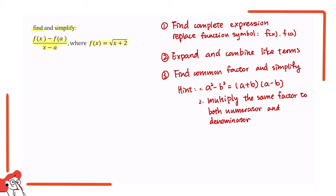OK, so we have f(x) minus f(a) over x minus a. As I said, we want to find the complete expression so we can further simplify it. And we want to get rid of f(x) and f(a).